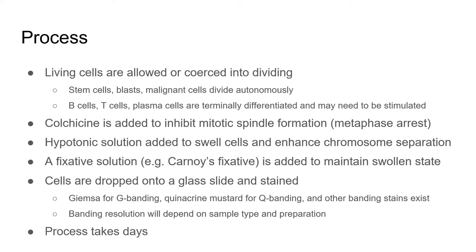You then drop the cells onto a slide from a height of about 2 feet or so, disrupting the cell and nuclear membranes and spreading the chromatin out onto the slide. Finally, the slide is stained in order to visualize the banding patterns on the chromosomes.